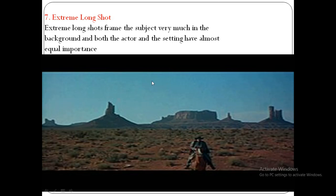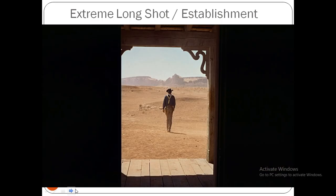They are also known as geography shots. A shot in which the subject is exceptionally far away from the camera is called an extreme long shot, or ELS. It can be used at the beginning of a scene to establish general location, called an extreme long shot or establishment shot. If it is taken from a high point like the top of a building, a hilltop, or a mountain peak, it is called an aerial or bird's eye view shot.